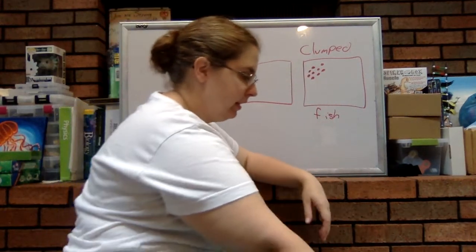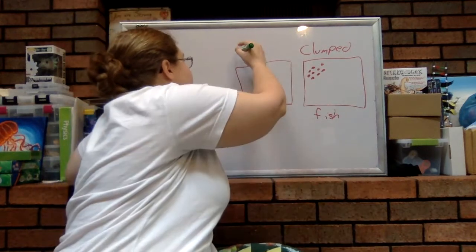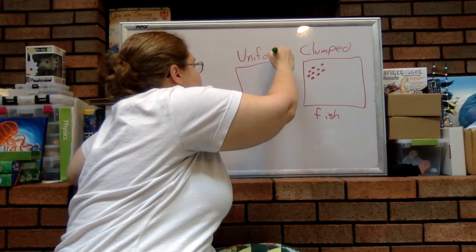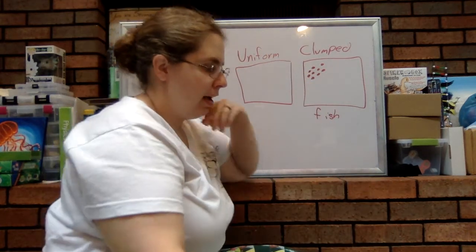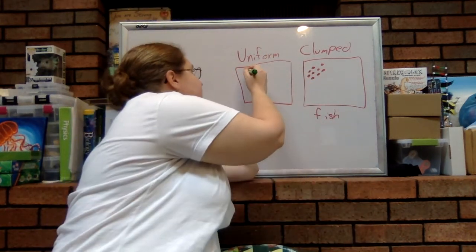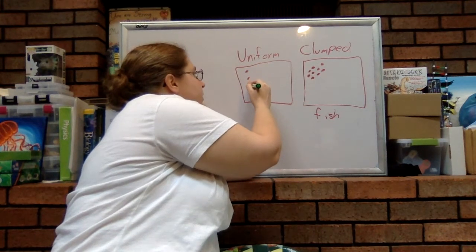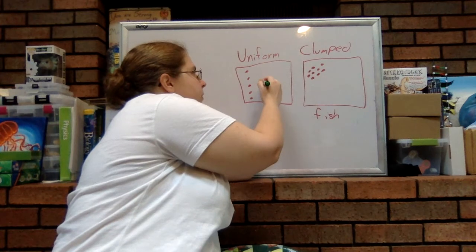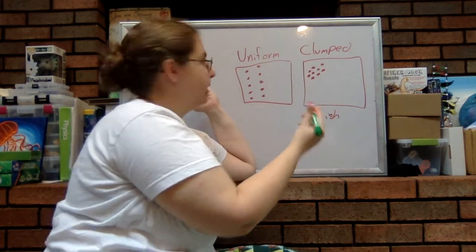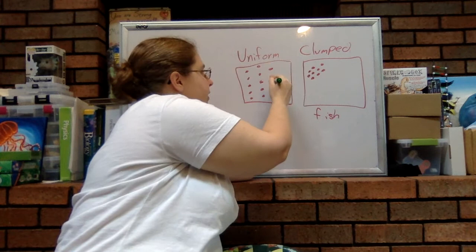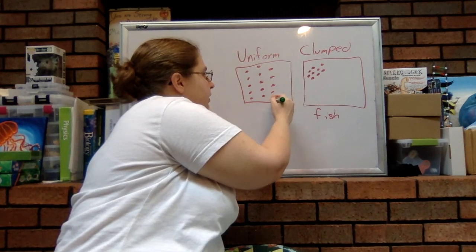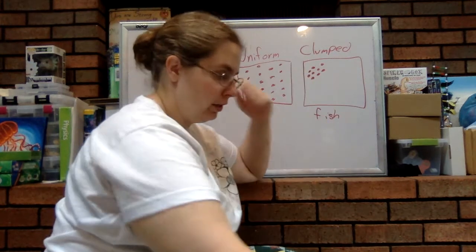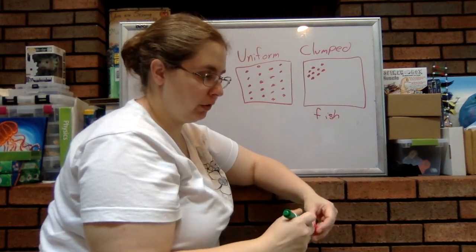So the next one would be uniform. And what this tends to look like is more so the individuals are, as the name suggests, pretty evenly spaced throughout the area. So they're uniformly or evenly dispersed.